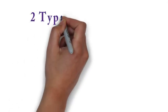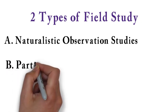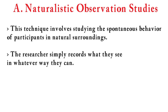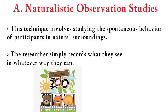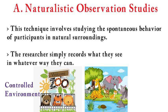There are two types of field studies: naturalistic observation studies and participant observer studies. Let's first tackle naturalistic observation studies. This technique involves studying the spontaneous behavior of participants in natural surroundings. The researcher simply records what they see in whatever way they can. Just imagine class — we are studying wild animals. If the experiment is controlled, these animals would be in a zoo. And if naturalistic, they will be in their natural habitat. Now let's apply that to psychology.